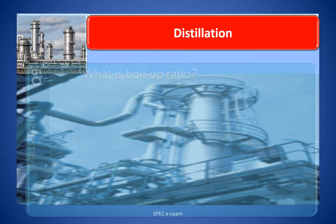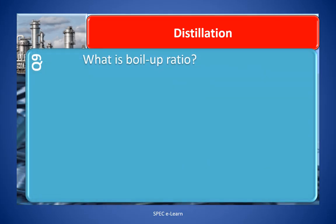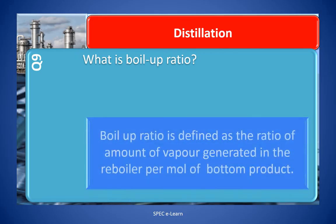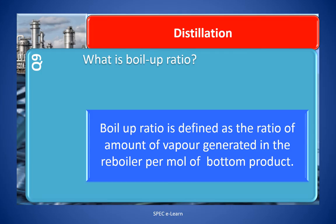Question number 9: What is boil-up ratio? The boil-up ratio is defined as the ratio of amount of vapor generated in the re-boiler per mole of bottom product.